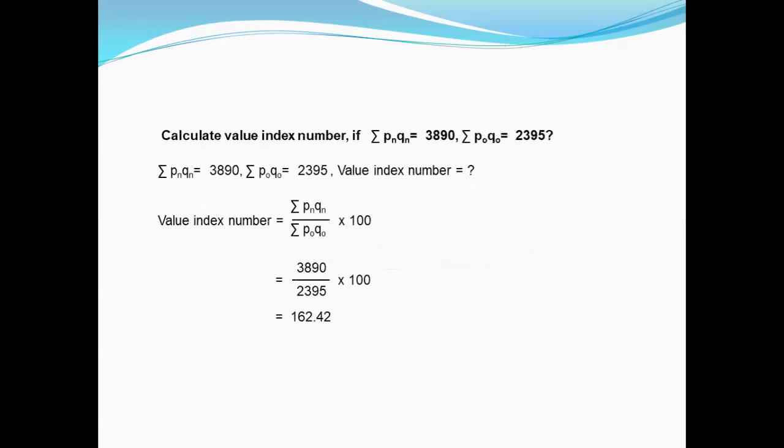Students, we have to calculate the value index number. If Σ P₁Q₁ equals 3890, Σ P₀Q₀ equals 2395.